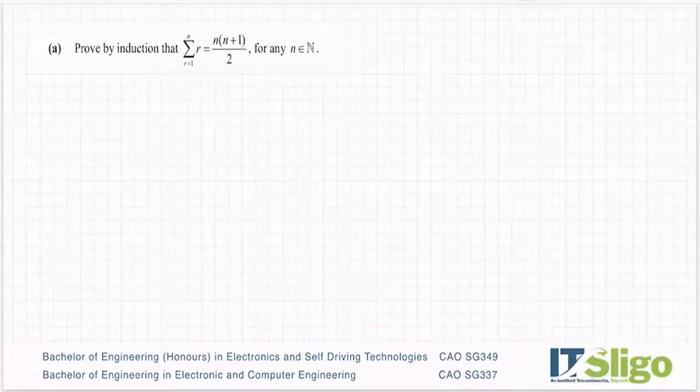Let's try this one and prove by induction that the sum of r is equal to n times n plus 1 over 2, where r goes between 1 and n.